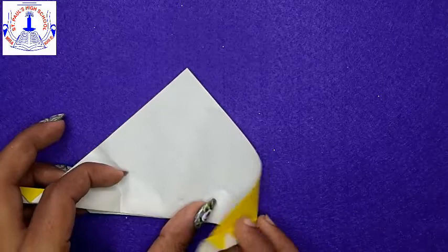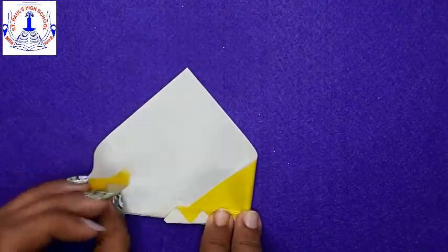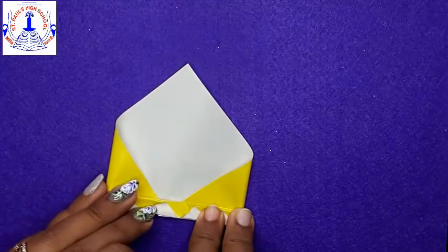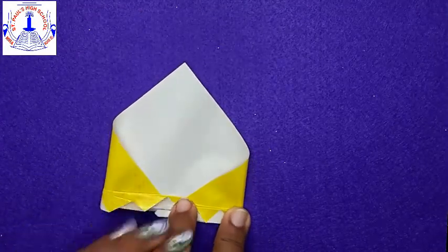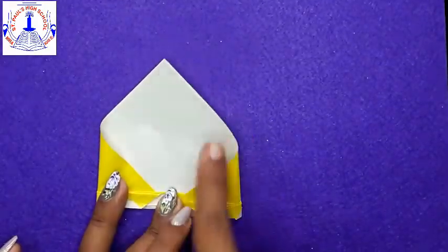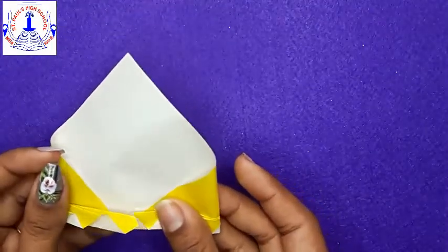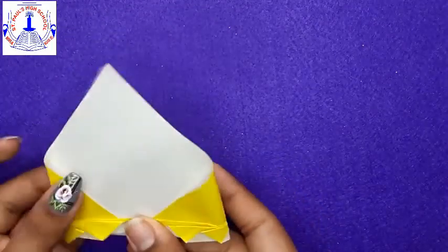Again, this way. See, fold it like a crown shape. Same way from here. See, like a crown you'll get. Okay? See, here. See, here we go. So fold it properly. So fold it properly. Crease it well.